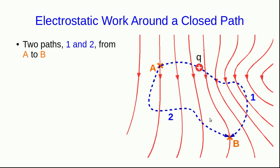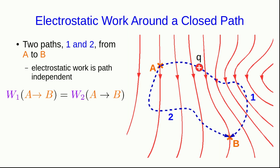Let's come back to very general cases. So here are our points A and B in some arbitrary E field, and let's think about two paths, one and two, that connect points A and B. Well, the electrostatic work is path independent, and so the work along path one has to be equal to the work along path two.